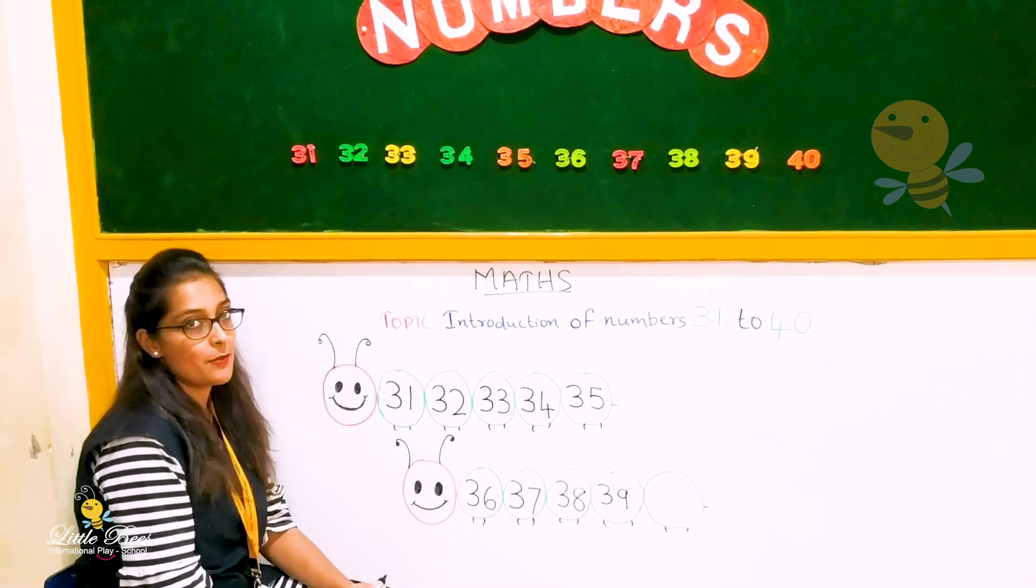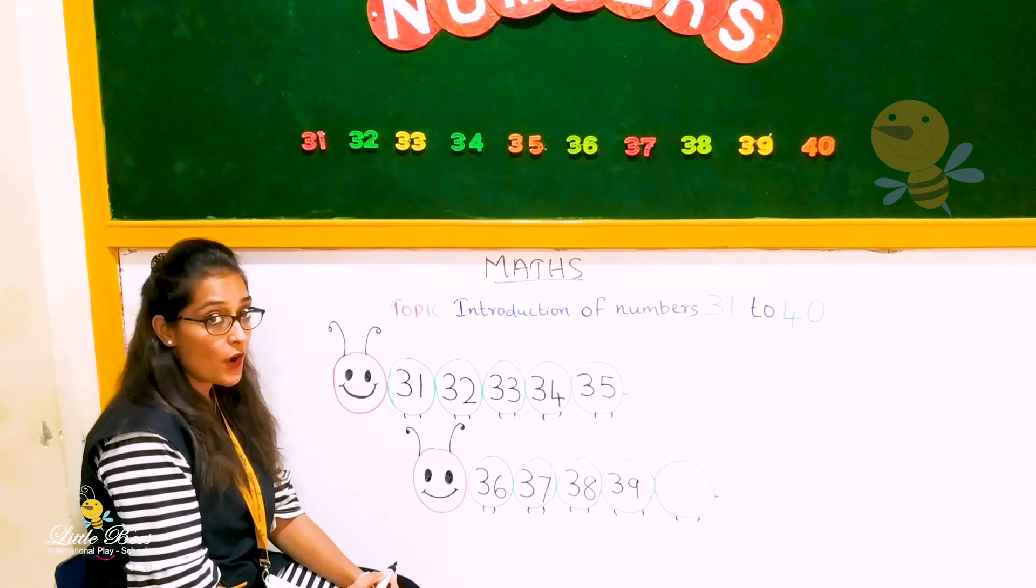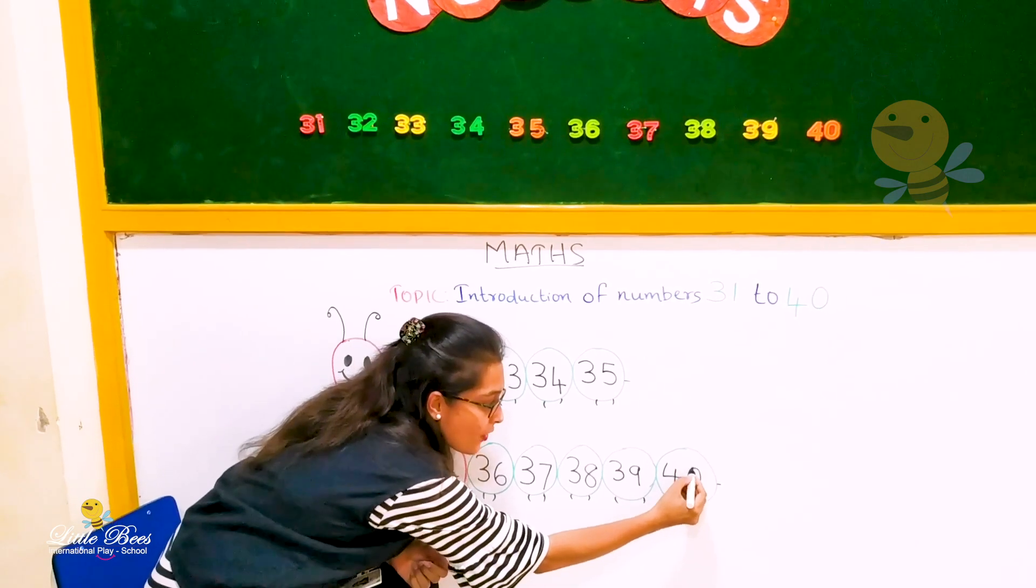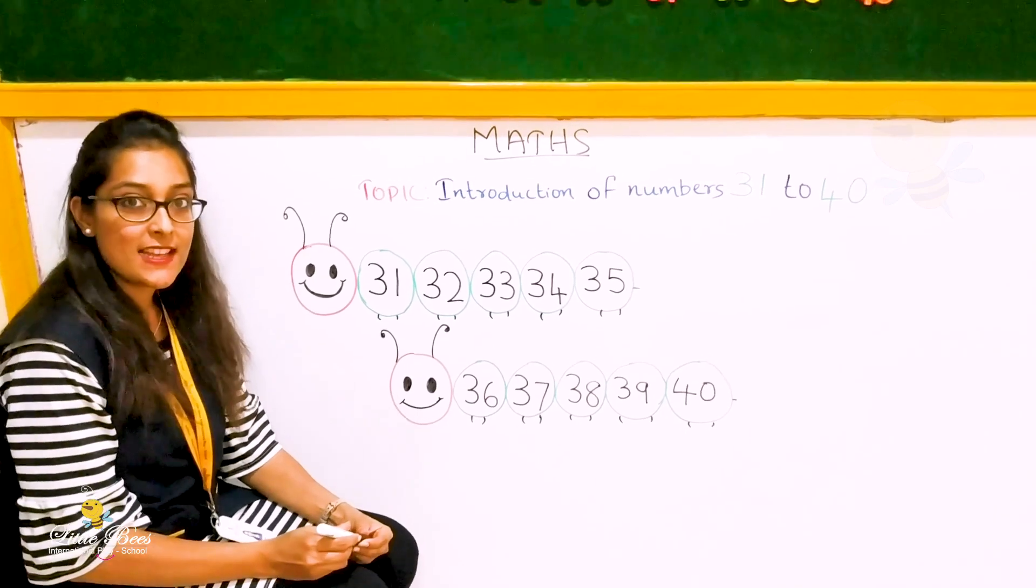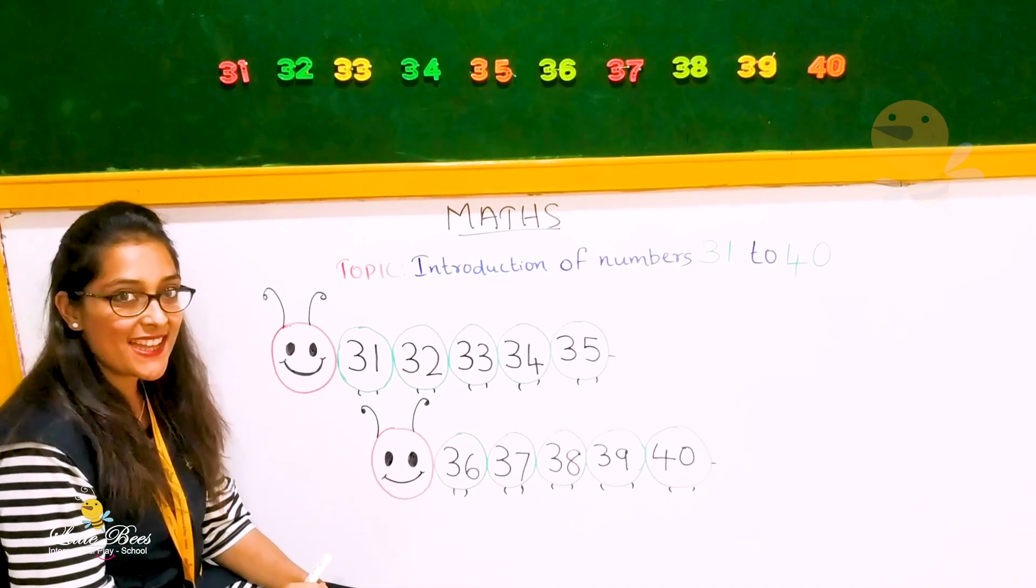And the last number for the day is 40. How do we write 40? 4, 0, 40. So you please practice these numbers and also repeat orally. Okay? Bye!